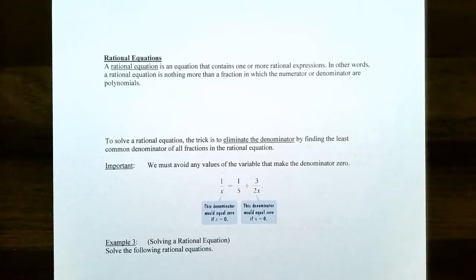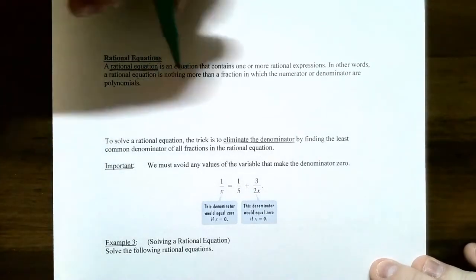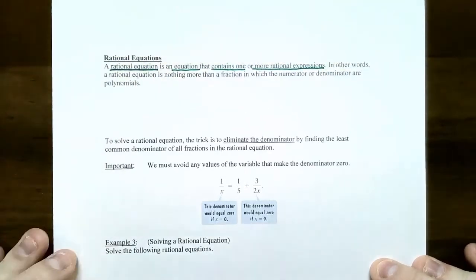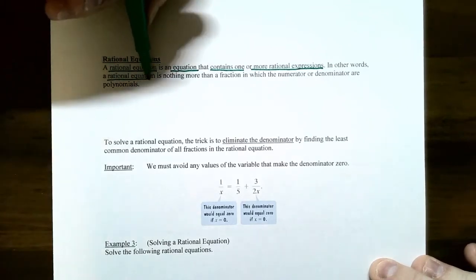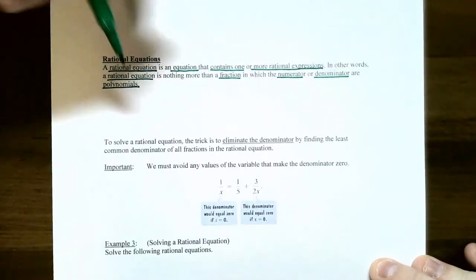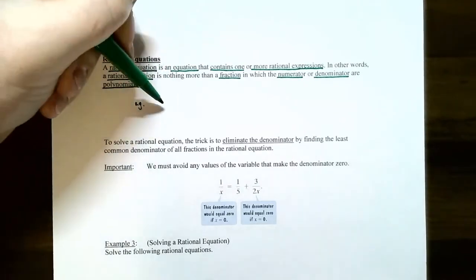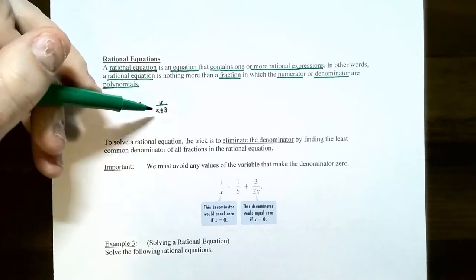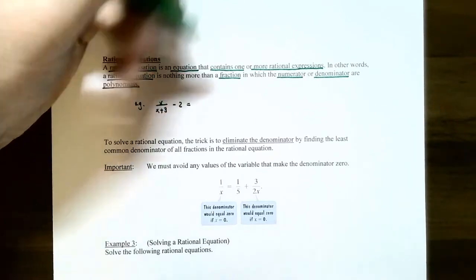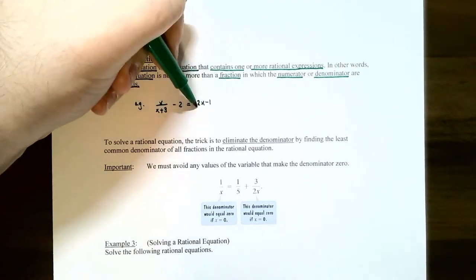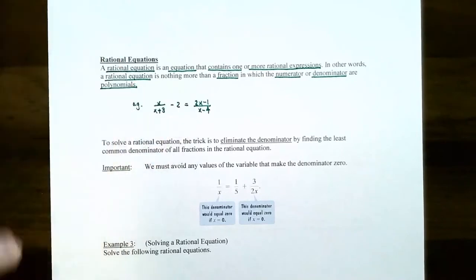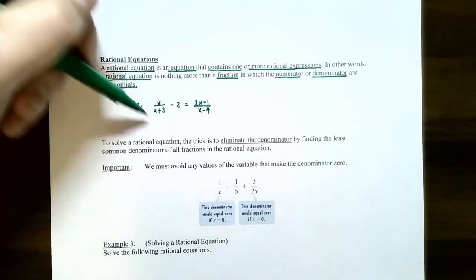So let's start by talking about what rational equations are. A rational equation is an equation that contains one or more rational expressions. A rational expression is where you have a fraction with the numerator or denominator containing polynomials. Here's a couple of examples of what a rational expression might look like: x divided by x plus 3. That's called a rational expression because you have variables in the numerator and/or denominator. So if this is an equation, this becomes a rational equation.